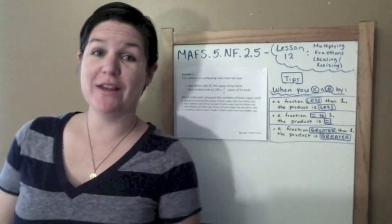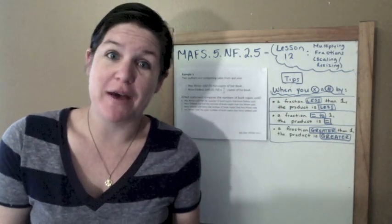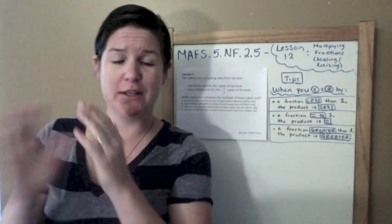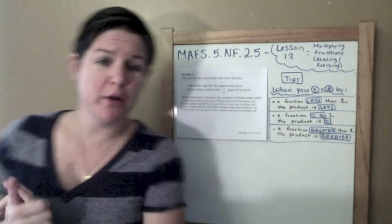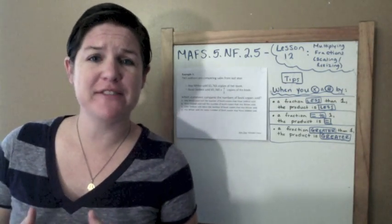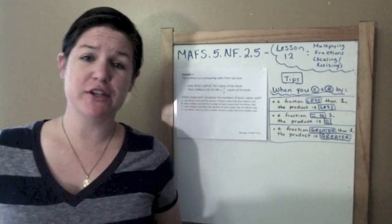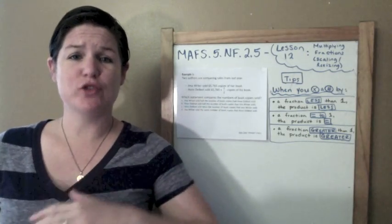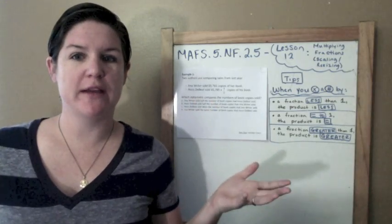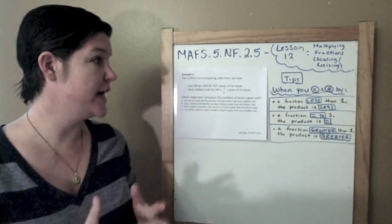Hello, everybody, and welcome to another episode of How to Pass the Math FSA. You've got Ms. McCarthy here. We are moving on to lesson 12 today, and our standard is Math 5.NF - that stands for fractions - .2.5. Today we are multiplying fractions by scaling and resizing.